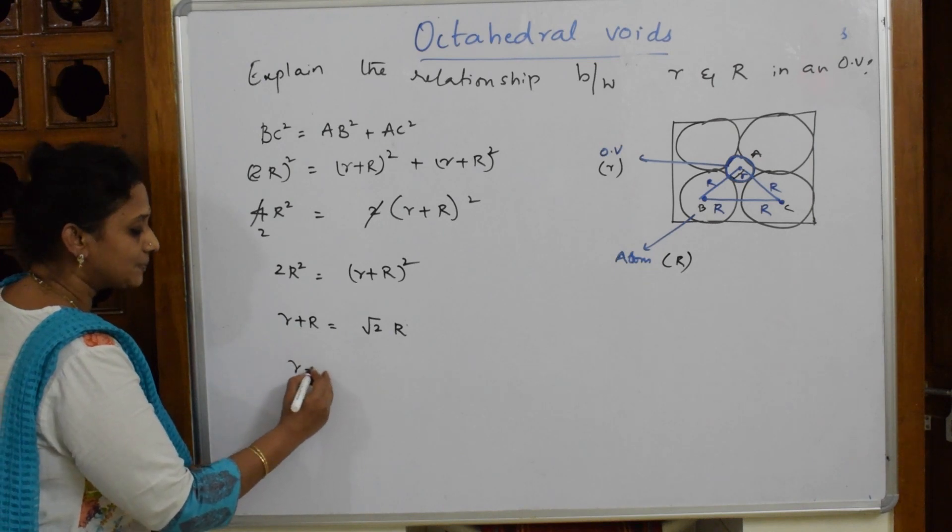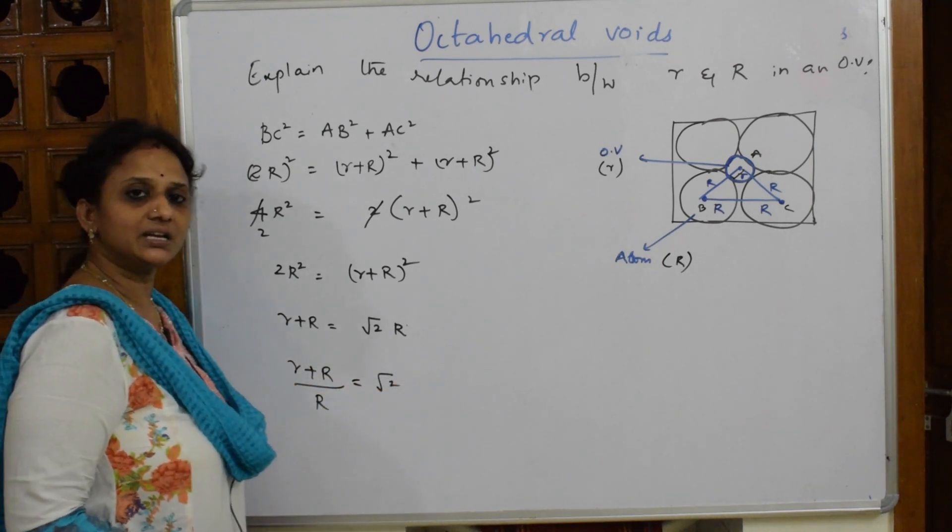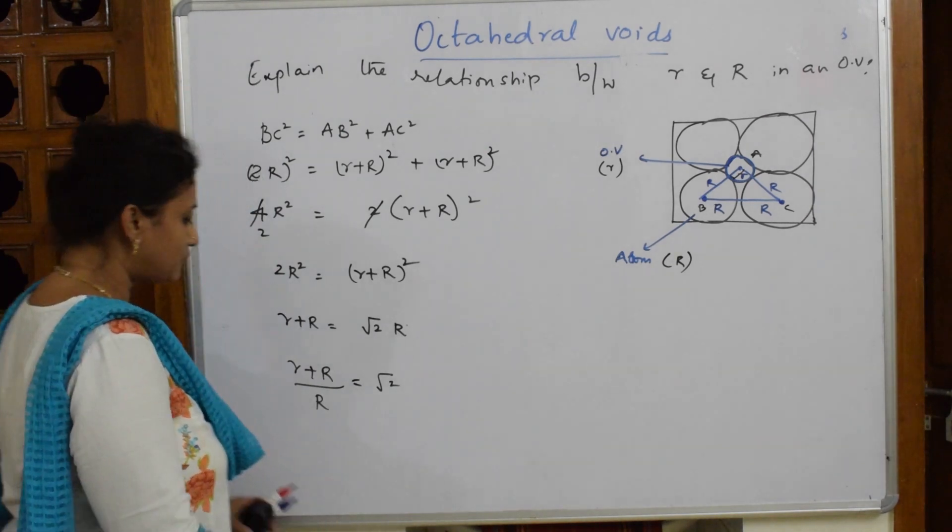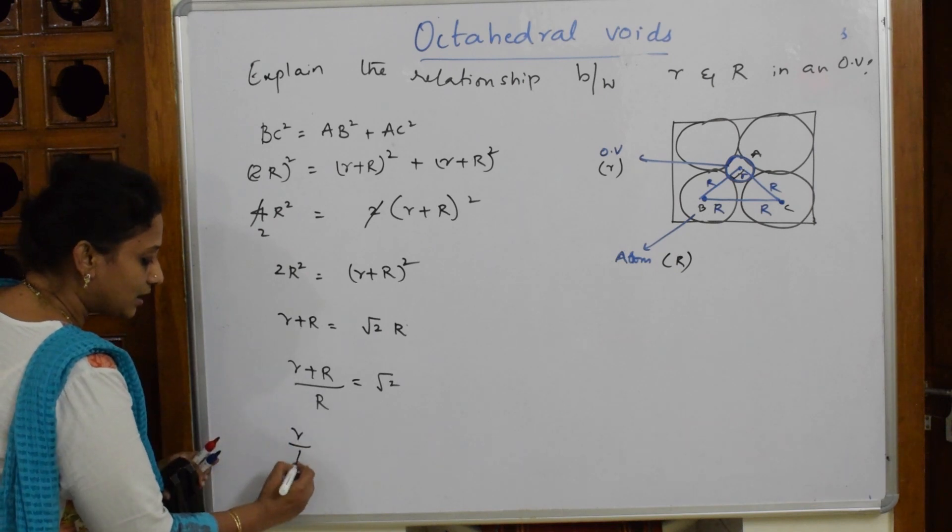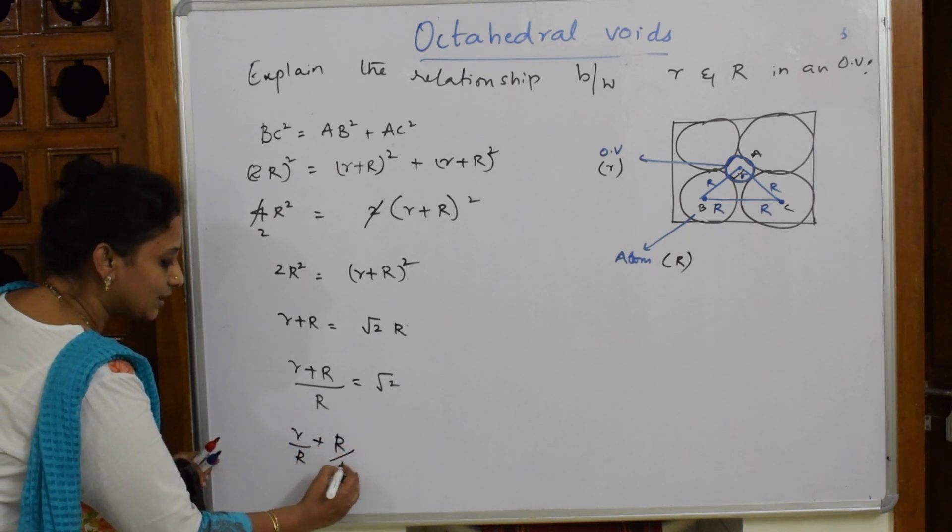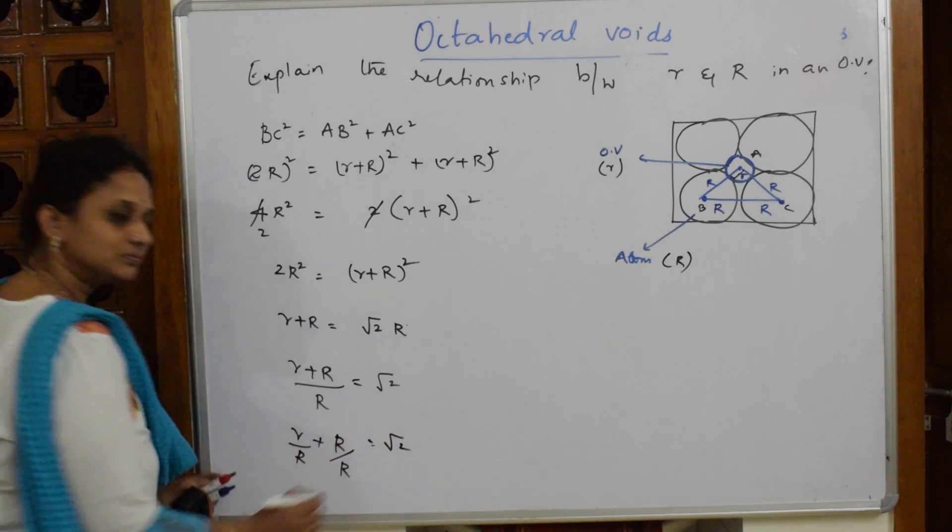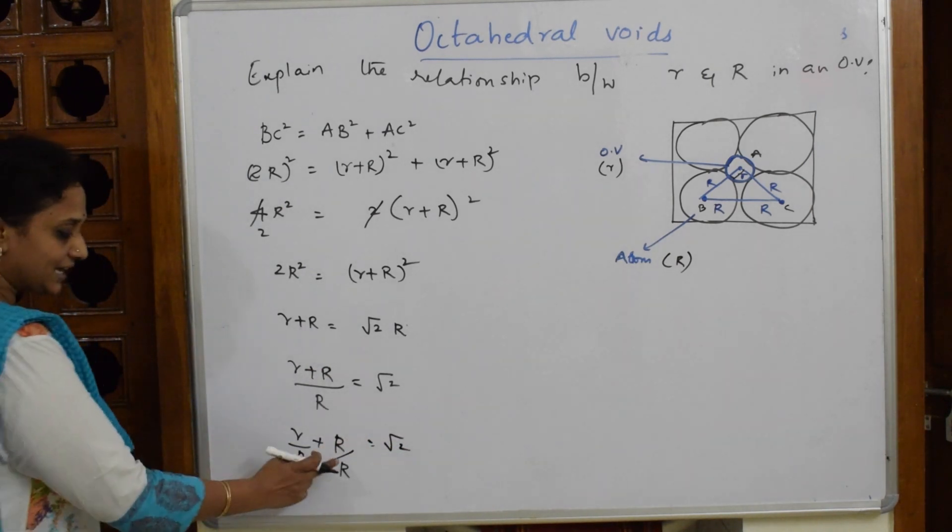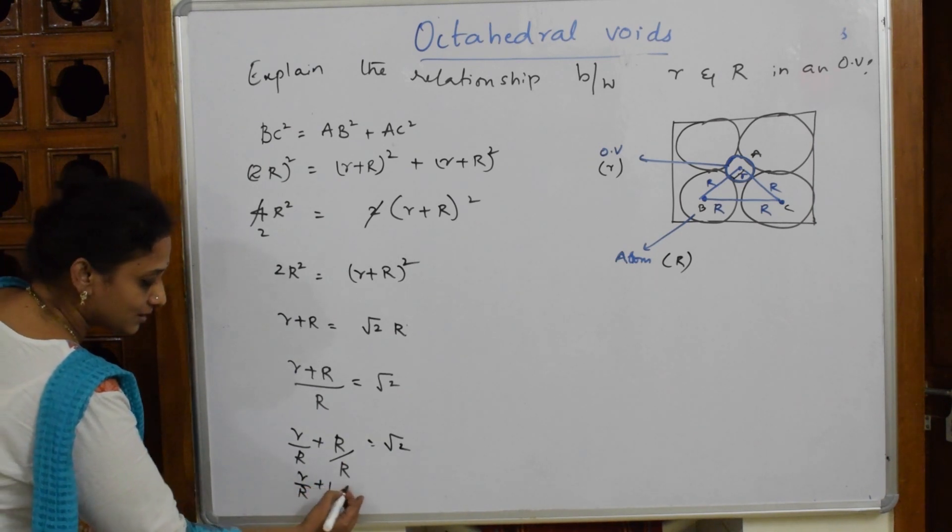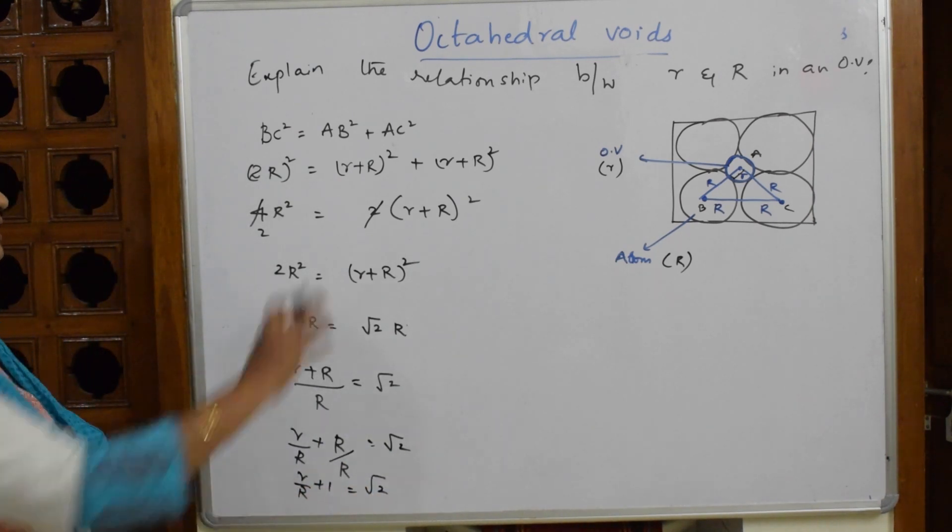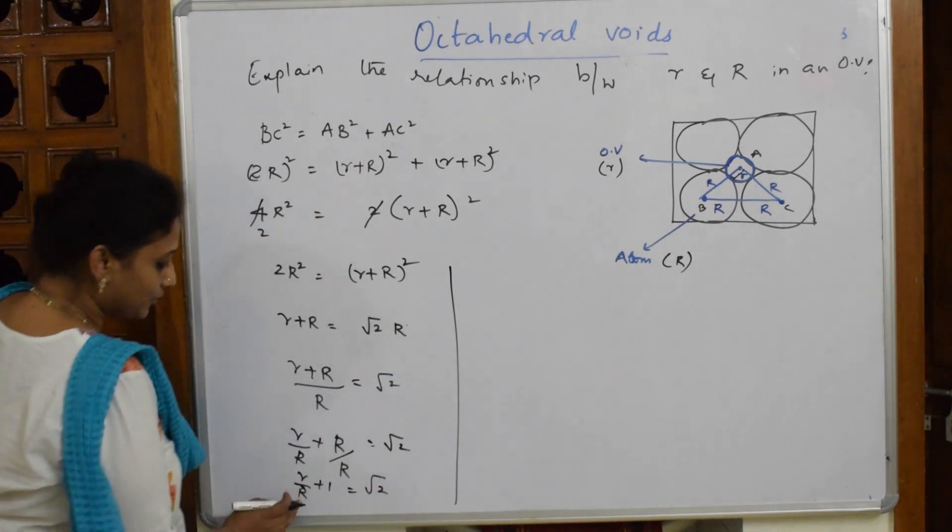√2 is 1.414. What am I doing? I am going to separate these terms: r/R + R/R. I took them individually = √2. Now I can write R/R as 1, so r/R + 1 = √2. I am trying to relate r and R. From this particular thing, r/R + 1 = √2.